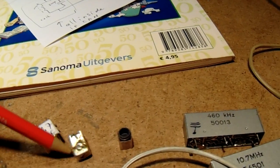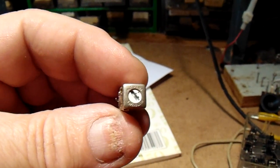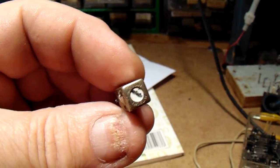Here another filter for 10.7 MHz. You can see there is a color code. This is white. White means in general 455 kHz.